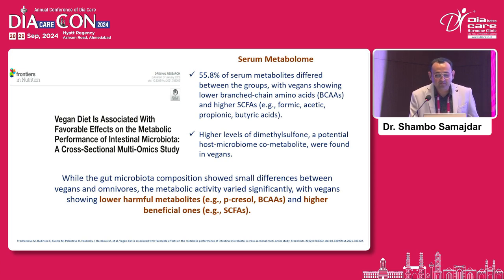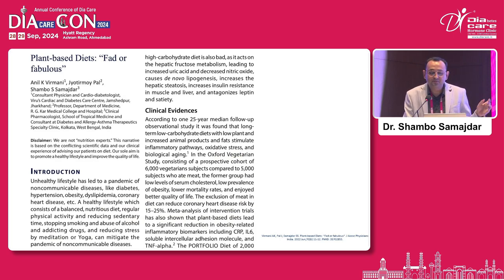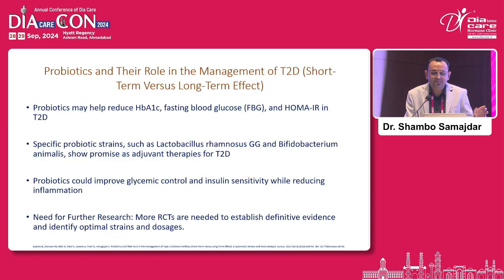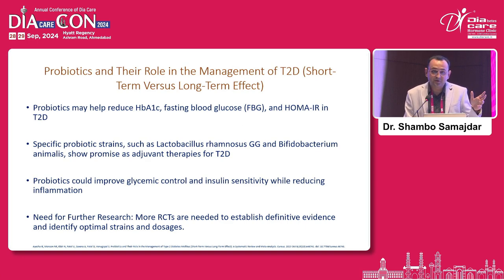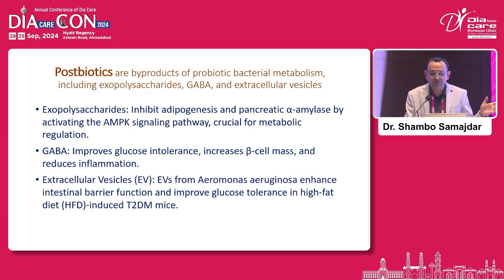Certain data show a vegan diet is beneficial, with higher butyrate levels. We also published in JAPI a paper showing a ketogenic diet decreases Th17-mediated inflammation. Probiotics have shown benefit in certain systematic reviews and meta-analyses, though not in significant HbA1c or fasting/postprandial glucose reduction. Synbiotics — a combination of probiotics and prebiotics — have also shown benefit in animal models.